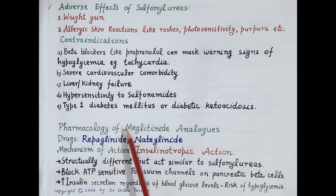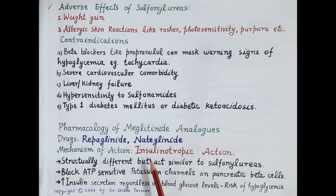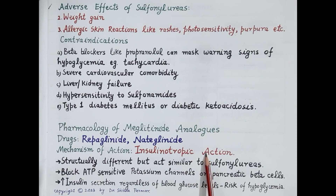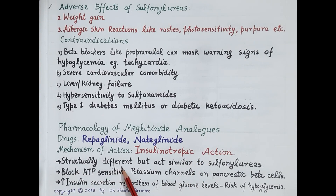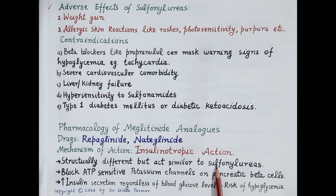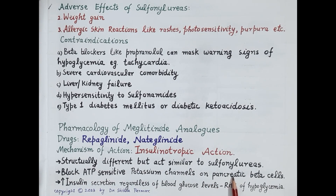Now let's discuss pharmacology of meglutinide analogs. This class includes two drugs: repaglinide and nateglinide. These are also insulinotropic agents — they stimulate pancreatic beta cells to enhance secretion of insulin. Both repaglinide and nateglinide are structurally different from sulfonylureas but act similarly. Like sulfonylureas, these drugs block ATP-sensitive potassium channels on pancreatic beta cells, causing cell depolarization, influx of calcium, and exocytosis of insulin from the beta cells, thereby enhancing insulin secretion.